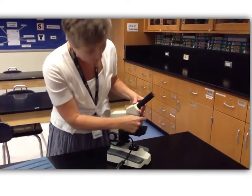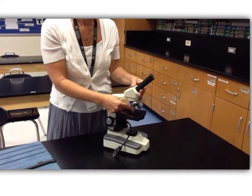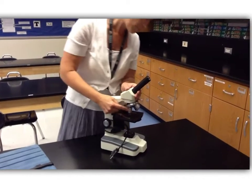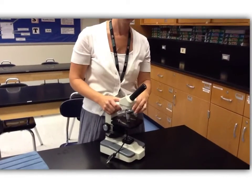We also have lenses down here, these are called the objective lenses. On most of our microscopes, there are three objective lenses, however, some of our microscopes only have two.